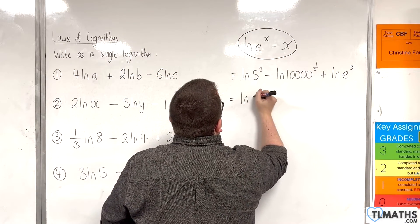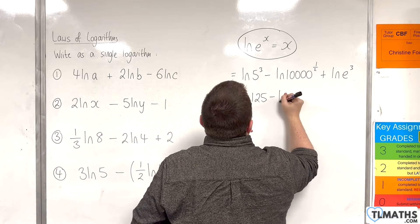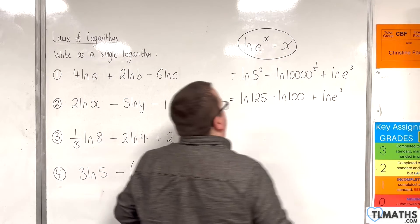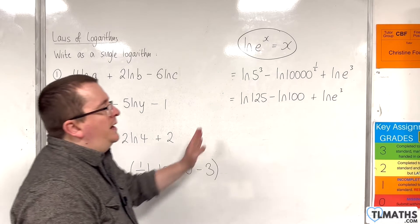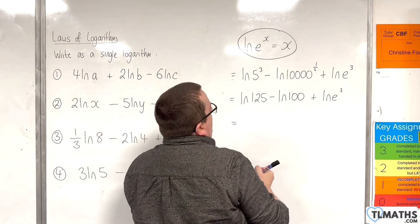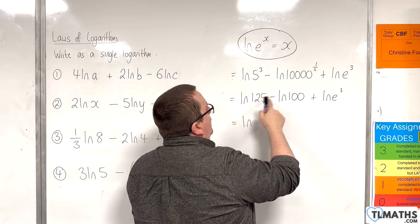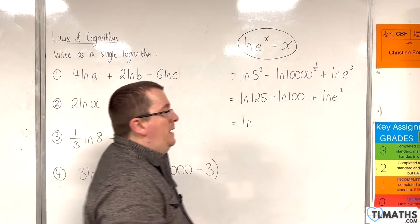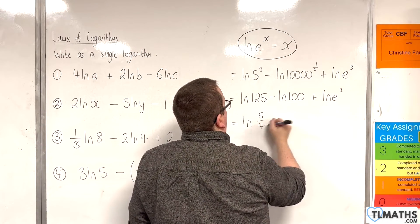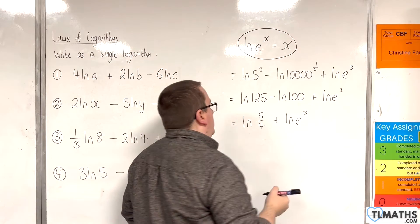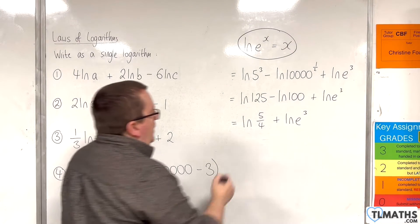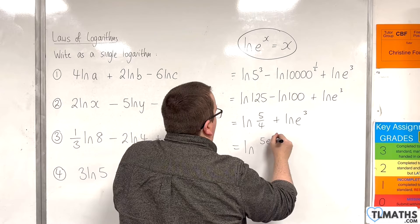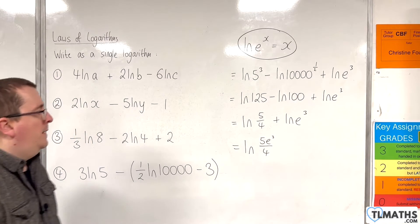So we have the natural log of 125, take away the natural log of 100, plus the natural log of e cubed. Working from left to right, using the quotient rule: the natural log of 125 over 100 is the natural log of 5 quarters. Then using the product rule, we can write that as the natural log of 5 quarters times e cubed, or 5e cubed over 4. And that's the last one.